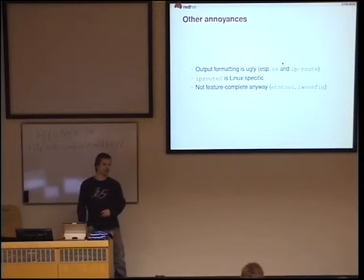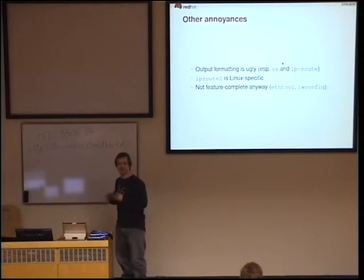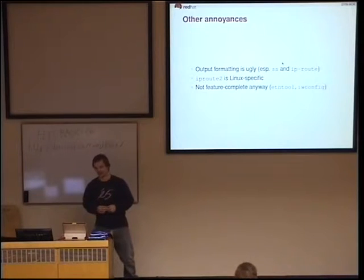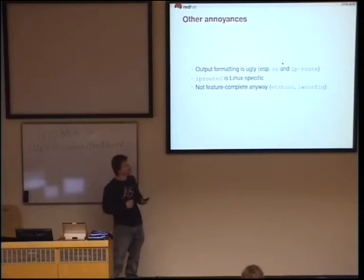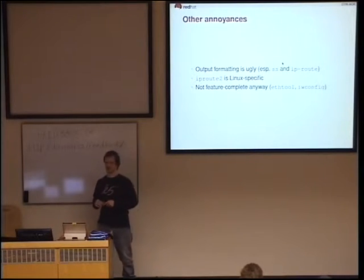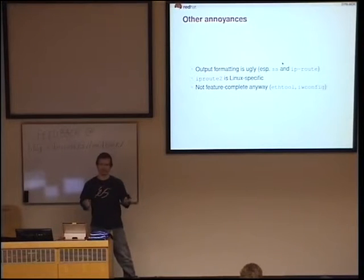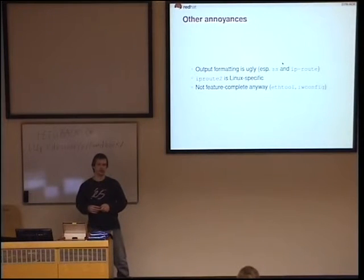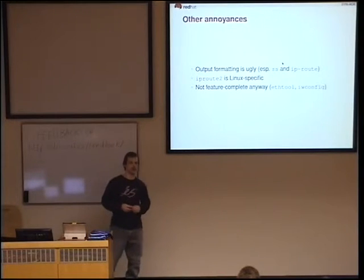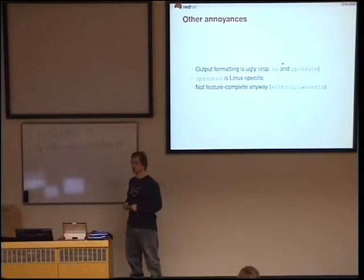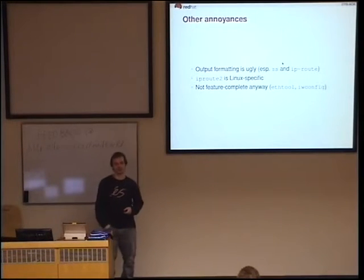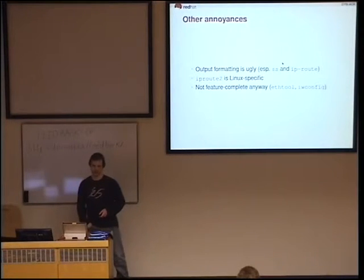Output formatting is a big issue. When you're trying to display the routing table, you don't see a table at all — it's just a number of messy lines. SS kind of goes the opposite way: it overdoes tabling, so you always get the full terminal width, no matter how wide your terminal is, and it still tends to break lines. Another thing I heard was that iproute2 is Linux-specific. ifconfig, netstat, route — these are basically Unix commands, so going to BSD or Tru64, you at least have an idea what to look at. But iproute2 doesn't exist there at all.